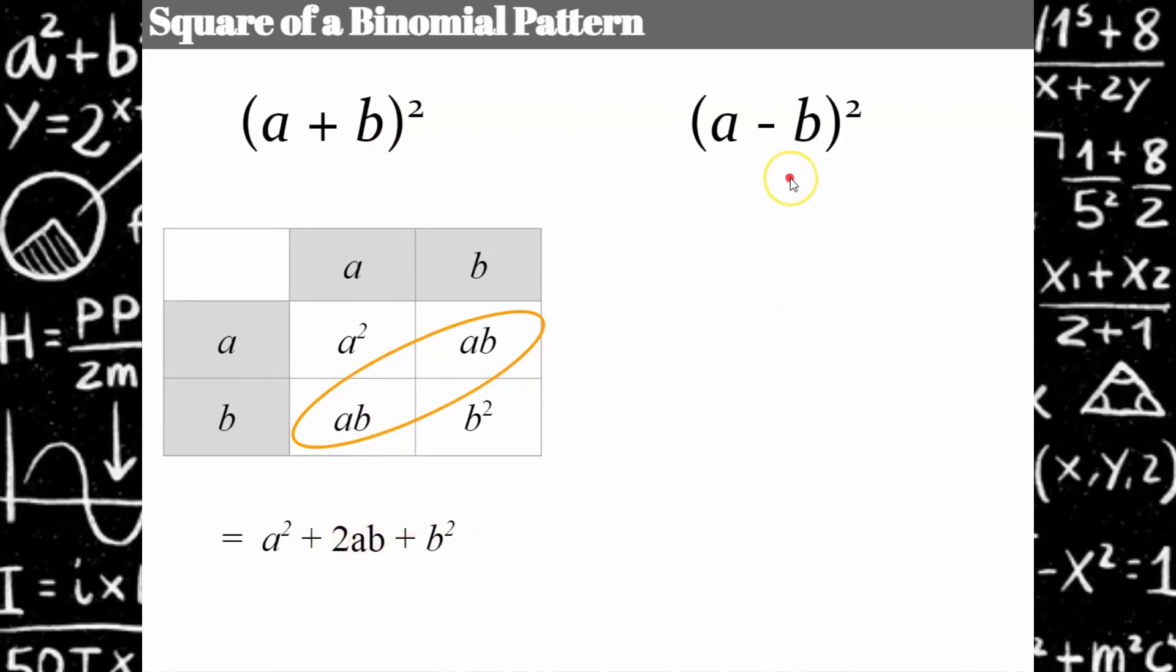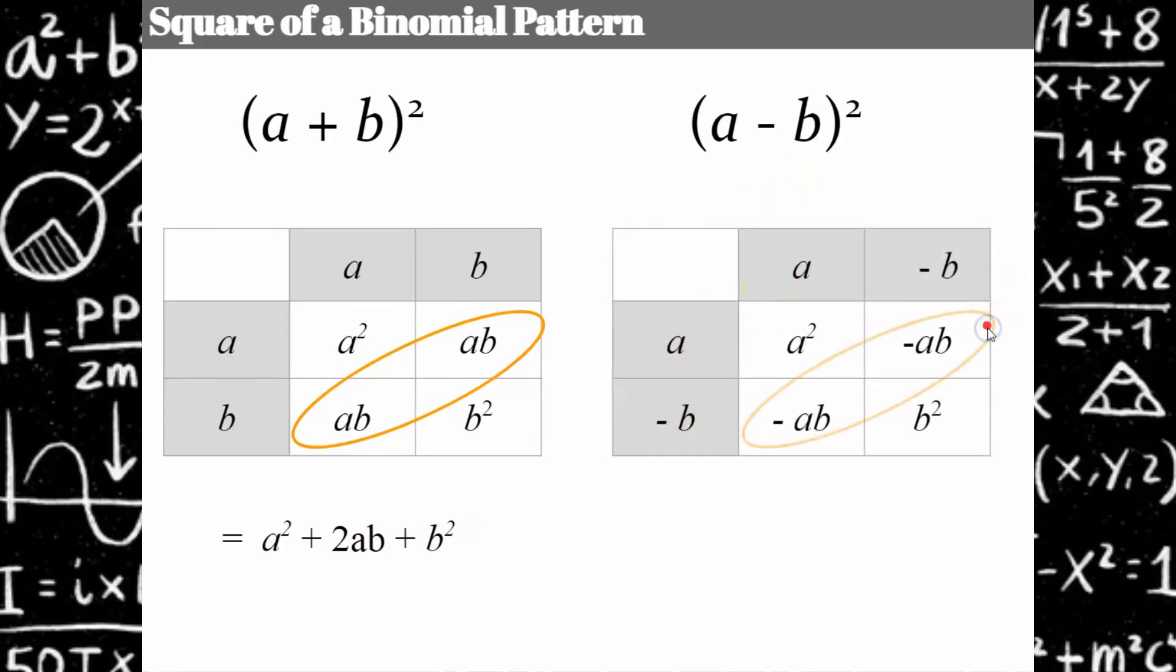Now, when we look at the difference, A minus B, A minus B, here's our like terms, we're going to have the center term subtracted. You still square A, square B, and the middle term here is going to be negative 2AB.